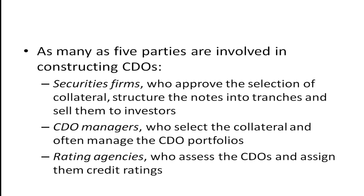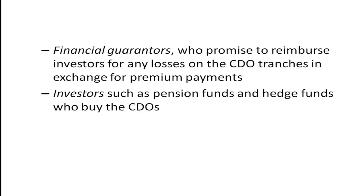Rating agencies such as S&P or Moody's assess the CDOs and assign them a credit rating. During the financial crisis in 2008, credit rating agencies received a very bad reputation for doing such a poor job of rating securities like these. Financial guarantors promise to reimburse investors for any losses on the CDO tranches in exchange for premium payments — essentially acting as insurance companies — and this is a way to boost the rating of the CDO tranche by providing a guarantee.